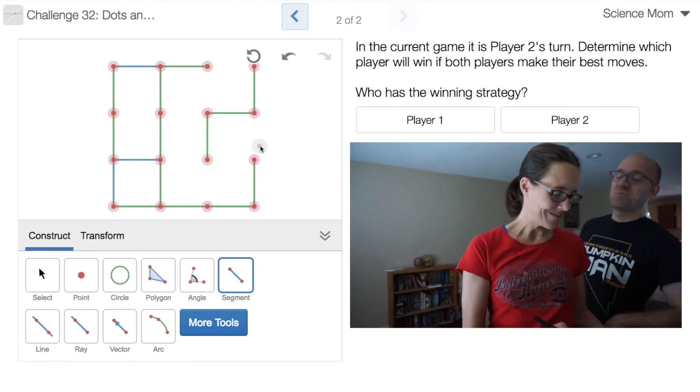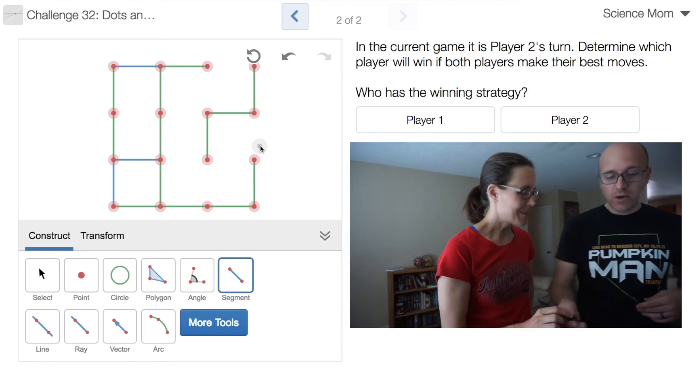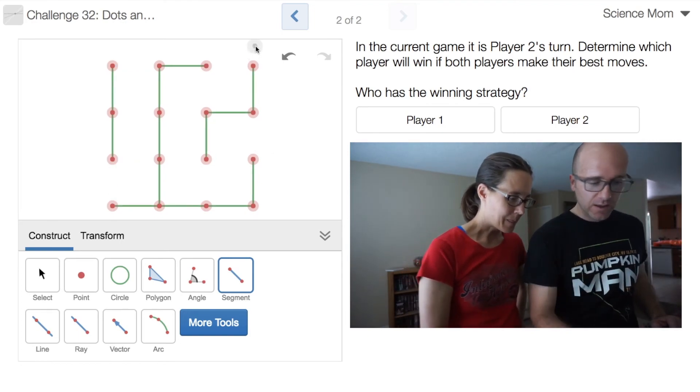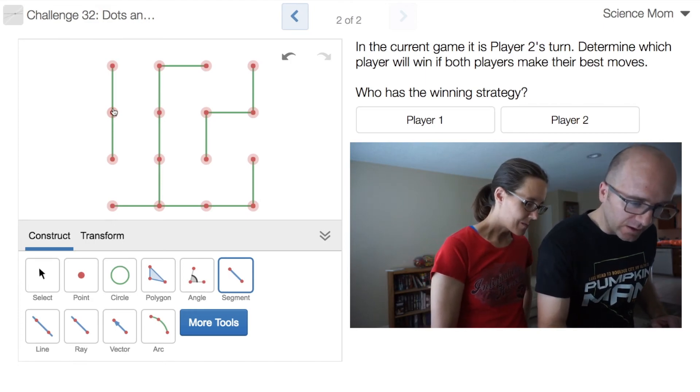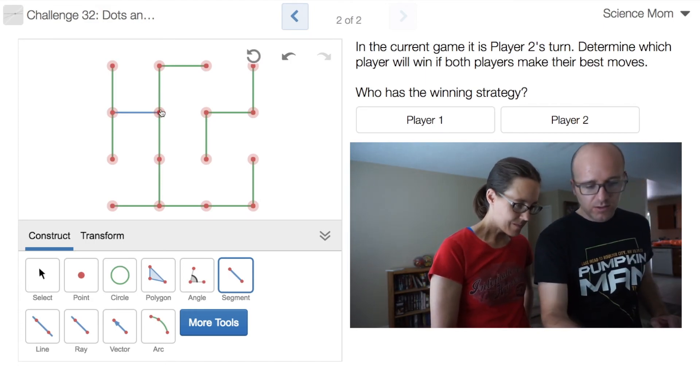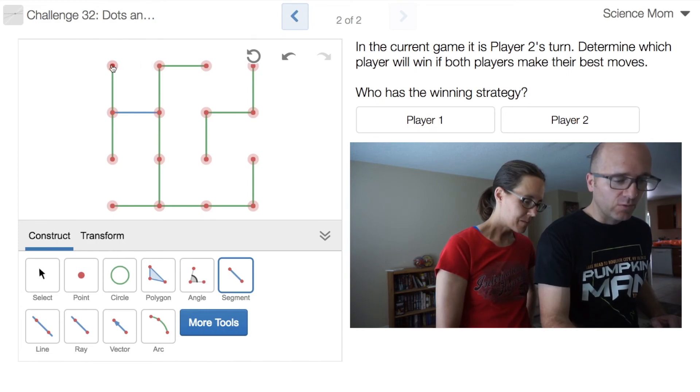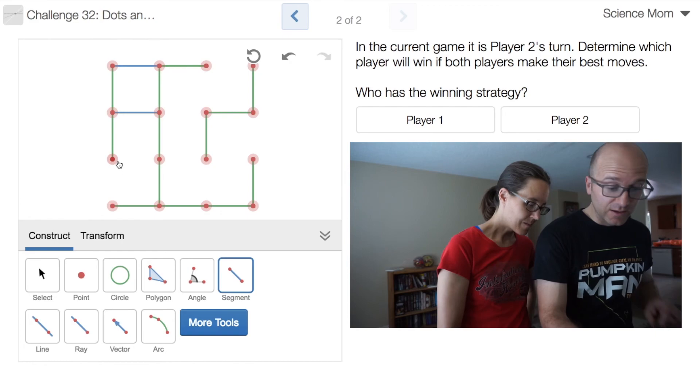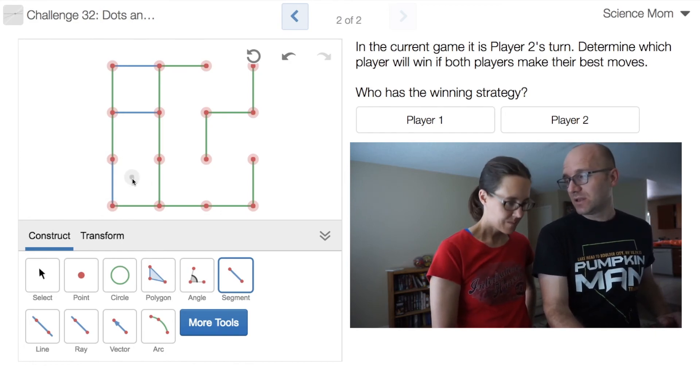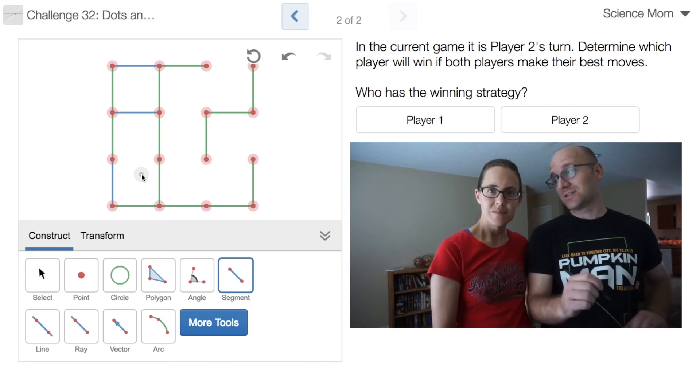That is correct. Player one does have the winning strategy, regardless of how you had decided to play over here. So suppose you had started right there. So that's player two. Then player one could get their one box, but then the real secret was not to get another box immediately. Otherwise player two is going to steal their victory.